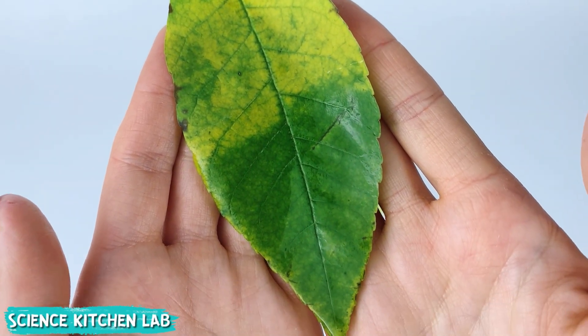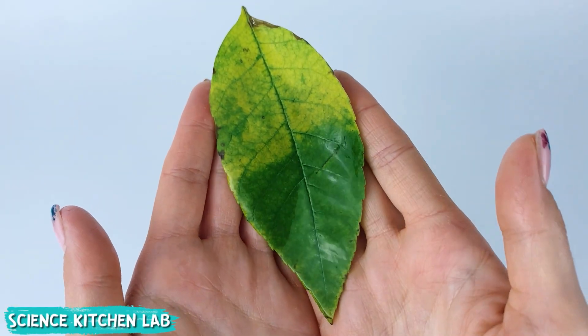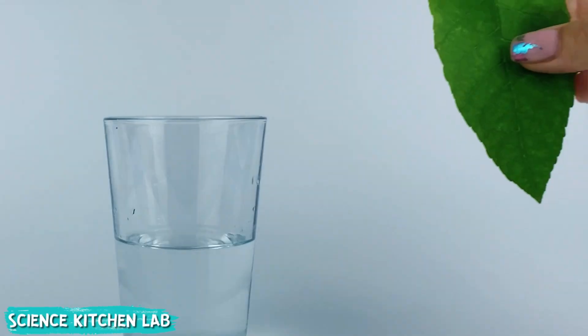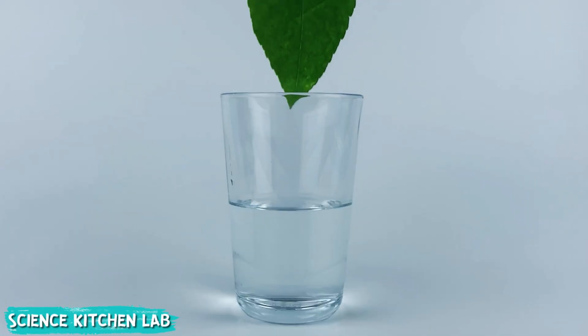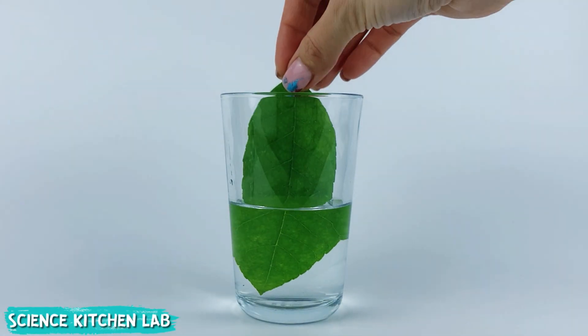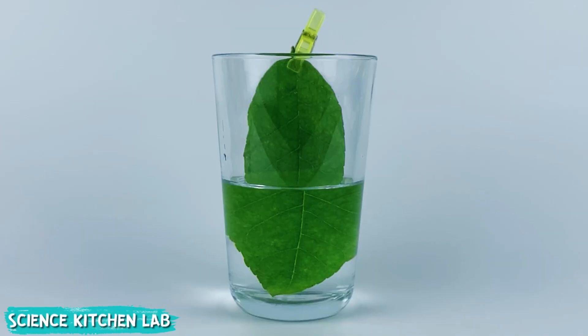Should we create autumn on half a leaf? This experiment will definitely surprise you. We take an autumn leaf that's just starting to turn yellow, dip half of it in a glass of water, secure it with a clothespin, and put it in a dark place for five days.